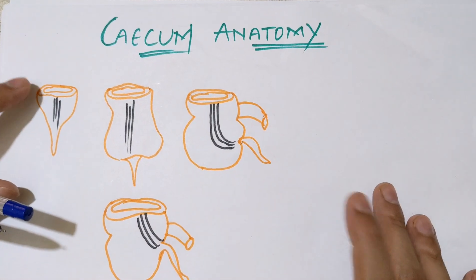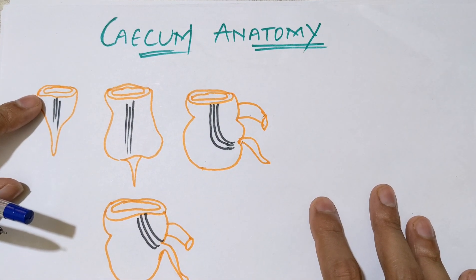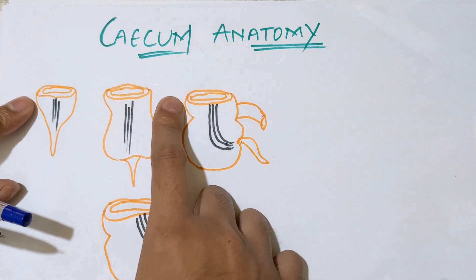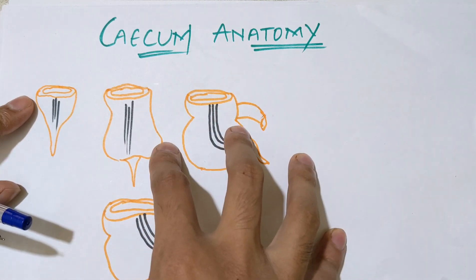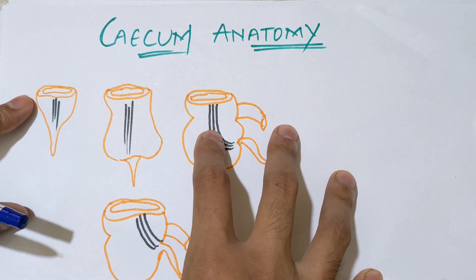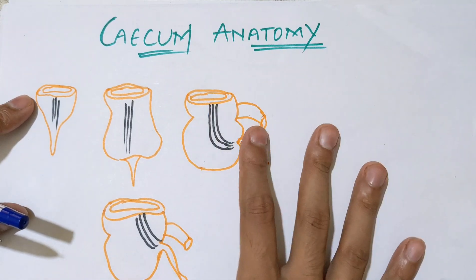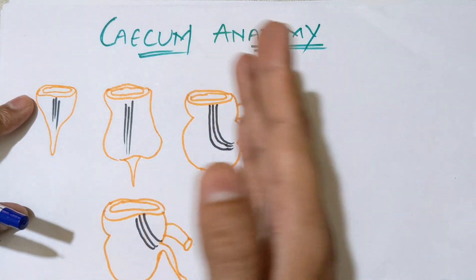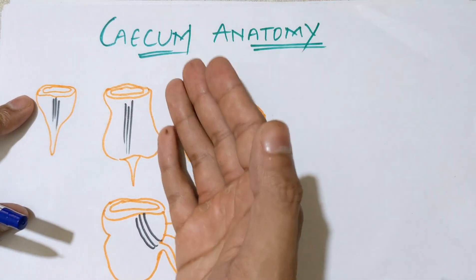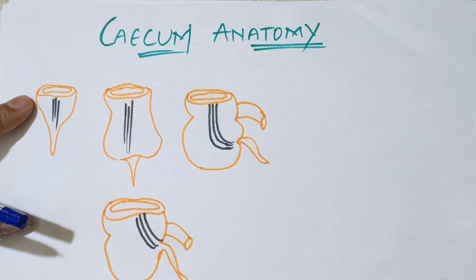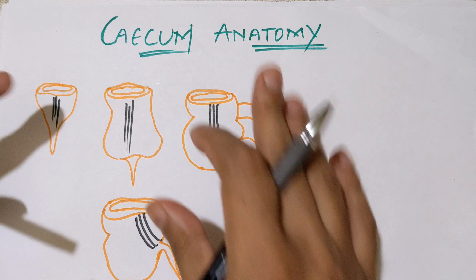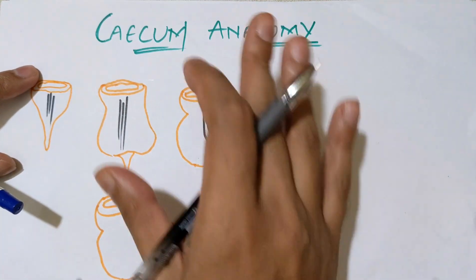Hello everyone, this is Suresh here. In this video we'll be discussing a separate section on large intestine anatomy, specifically the cecum. In the previous video I covered the basic external structures, topography, and parts of the large intestine. In successive videos we'll discuss different parts in detail — starting with the cecum, then the vermiform appendix, colon, and rectum.